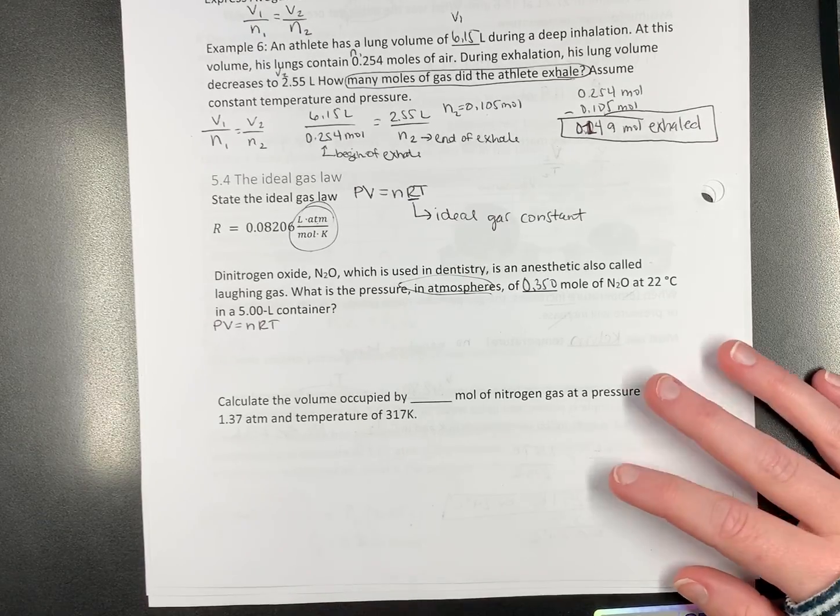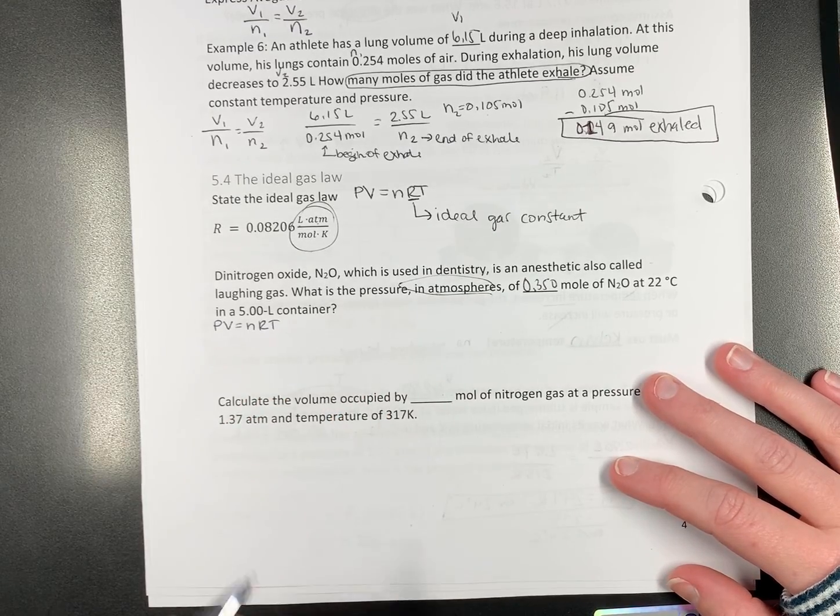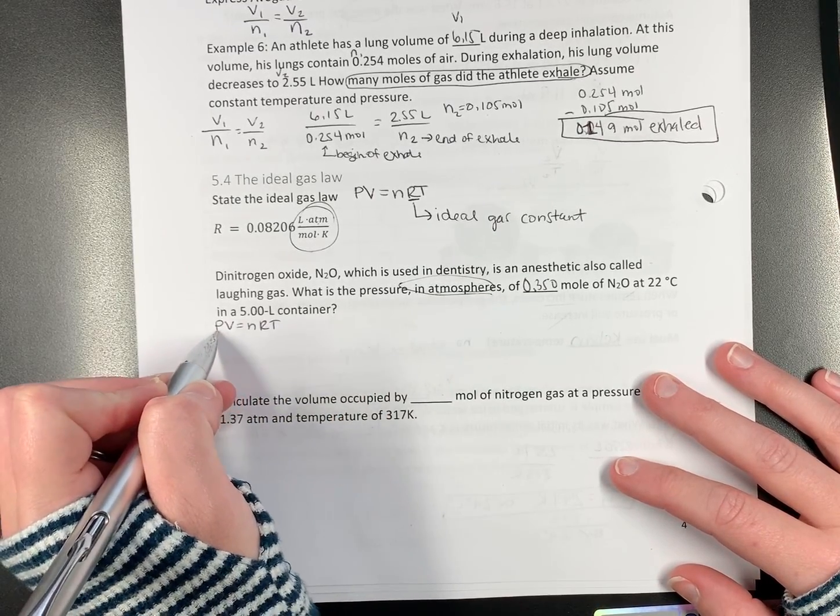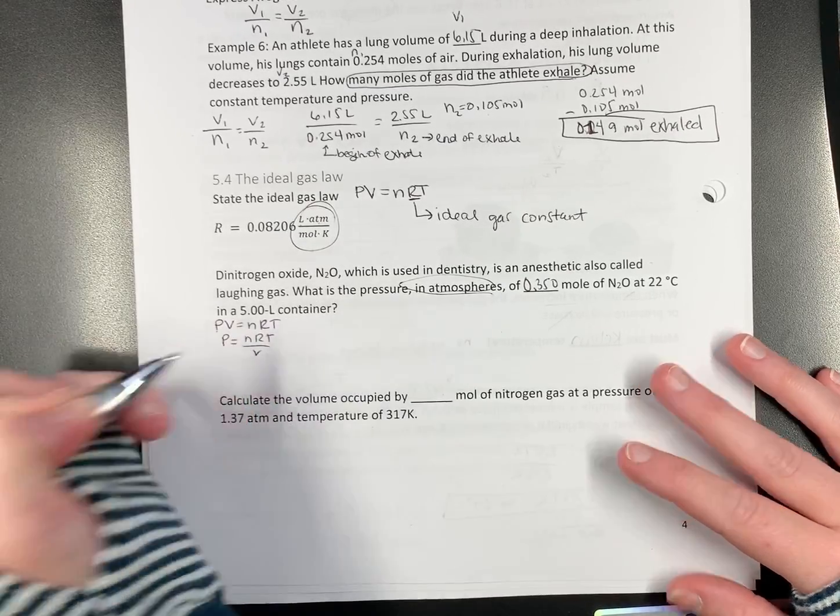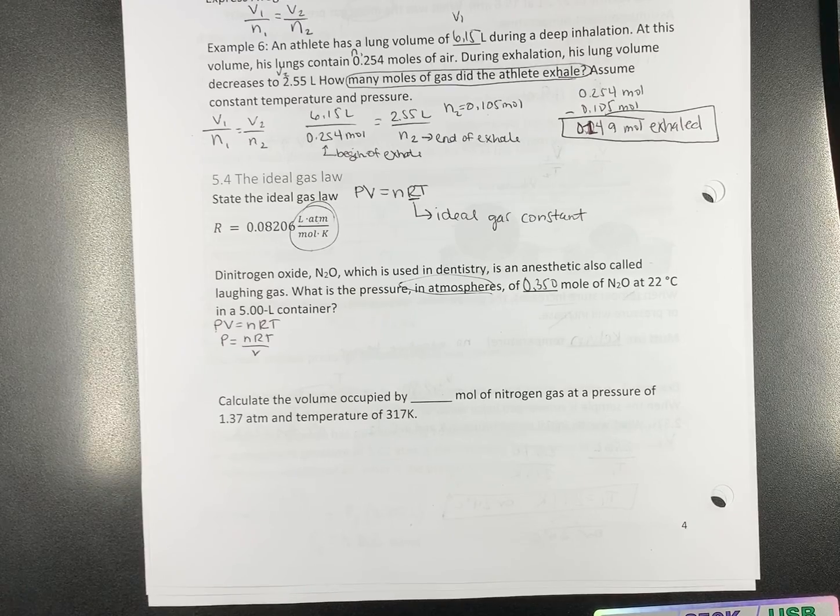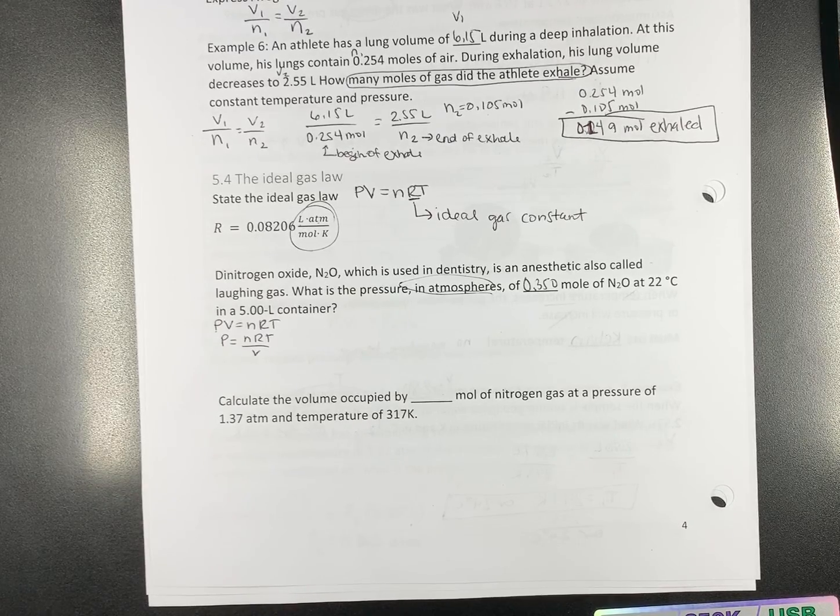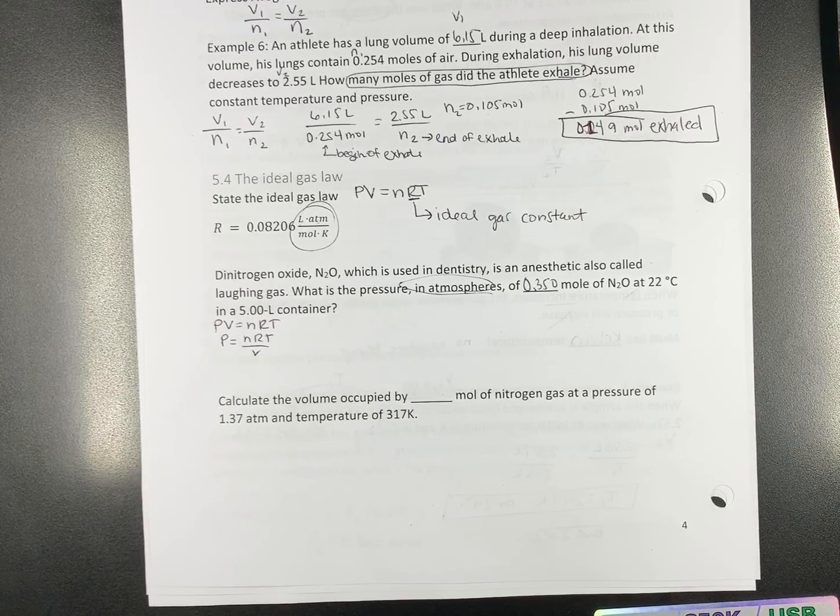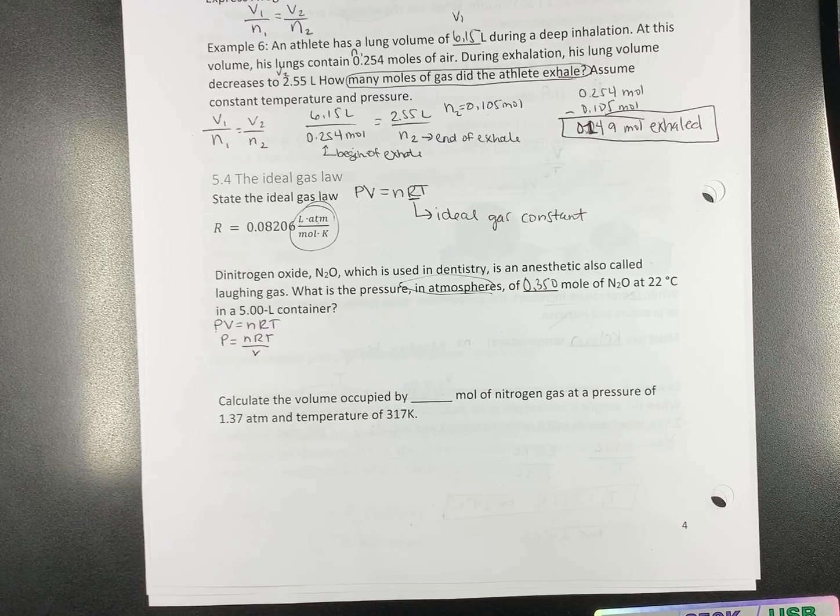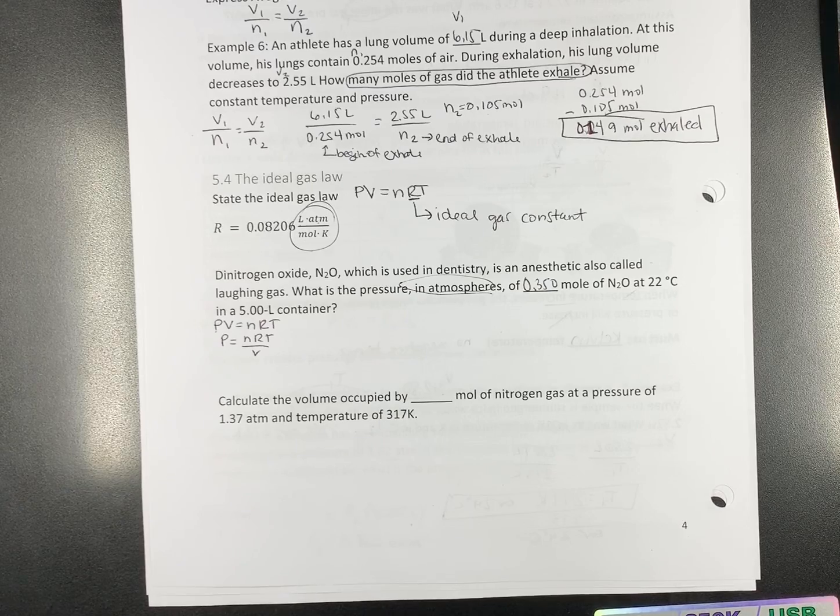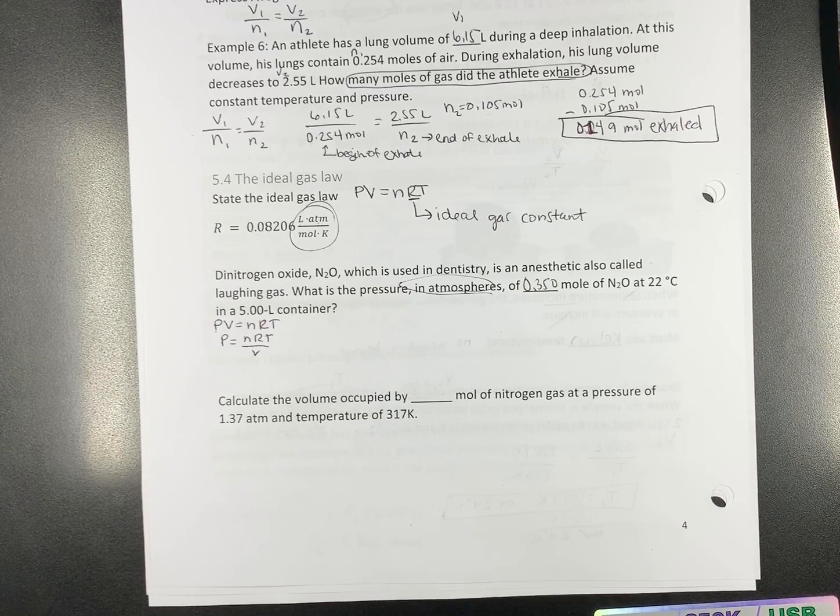The way the book tells you to solve this problem is to rearrange it. This says, what is the pressure? So, it's going to tell you to solve for pressure. So, P equals NRT over V. And then plug it in that way. That's not how I do it, but you will get the same answer. Looking at this problem, what's the first thing we actually need to do?